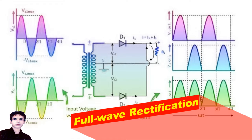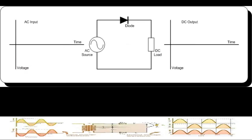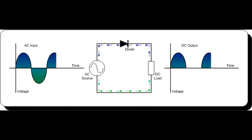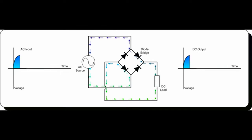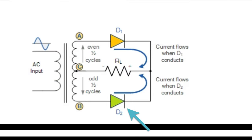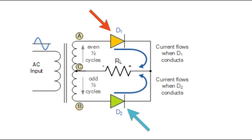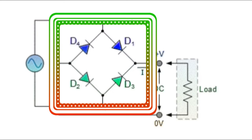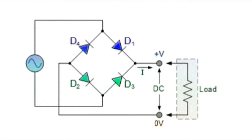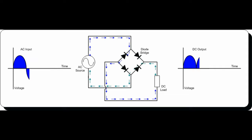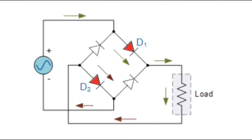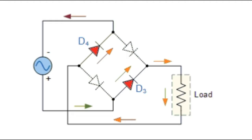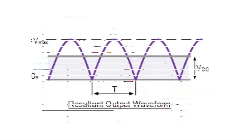Full-wave rectification: unlike the half-wave rectifier explained in the previous video, the full-wave rectifier uses both halves of the input sine waveform to provide a unidirectional output. This is because a full-wave rectifier basically consists of two half-wave rectifiers connected together to feed the load. The single-phase full-wave rectifier uses four diodes in a bridge arrangement, passing the positive half and inverting the negative half of the sine wave to create a pulsating DC output. Even though the voltage and current output is pulsating, it does not reverse direction, using the full 100% of the input waveform.